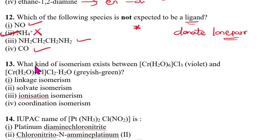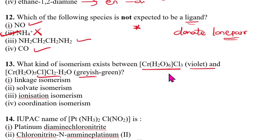Thirteenth question: what kind of isomerism exists between the violet and greyish-green forms of [Cr(H₂O)₆]? Think about solvate isomerism, also called hydrate isomerism. Here water molecules act as ligands — 6 water molecules in one case and a different number in the other. These have the same molecular formula but different water molecules acting as ligands, so it is solvate isomerism. The answer is option 2.